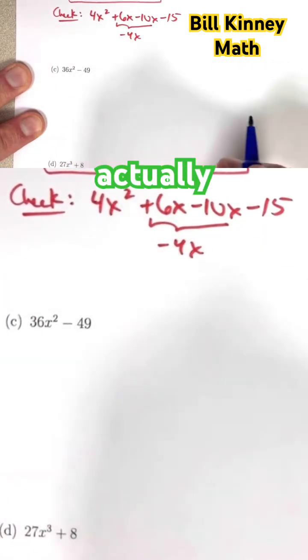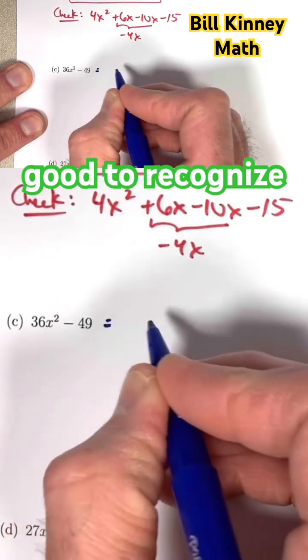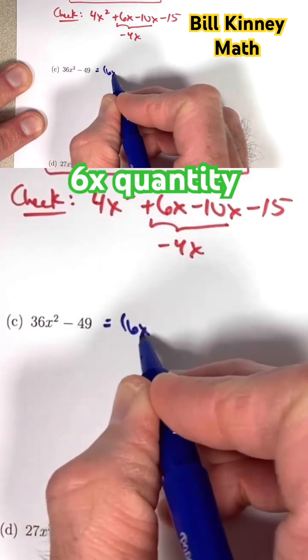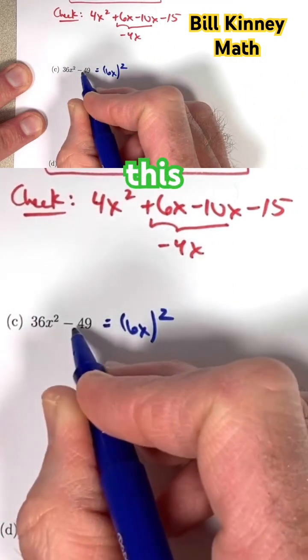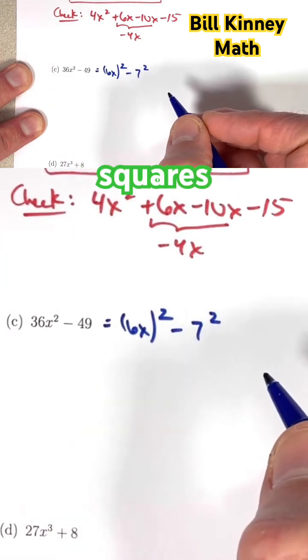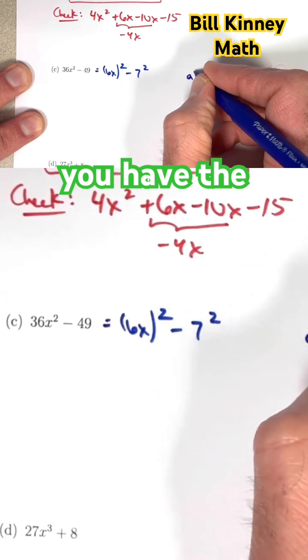You could do some trial and error, but in this case it's good to recognize that this is 6x quantity squared, and this minus 49 is minus 7 squared. This is the difference of two squares. Anytime you have the difference of two squares,